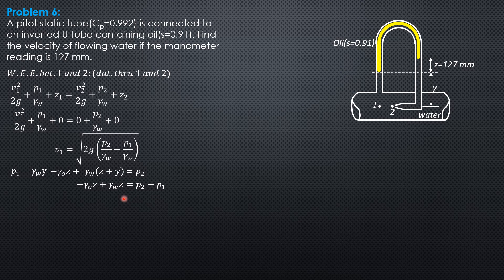Dividing everything by γ of water, we have negative S₀z plus z plus pressure head at 2 minus pressure head at 1. Remember that specific weight of oil divided by specific weight of water is specific gravity of oil. Factoring out z, we have z(1 minus S₀) equals pressure head at 2 minus pressure head at 1.